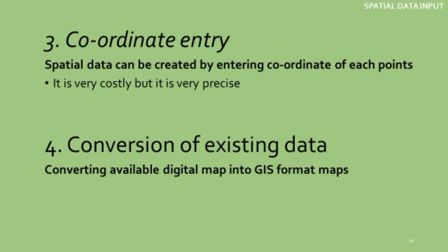The last method is conversion of existing data. If you already have a digitized map of the area you are considering, you can simply convert it to the GIS format. It is like converting a JPG image to a PDF — just a format change creates your spatial data.